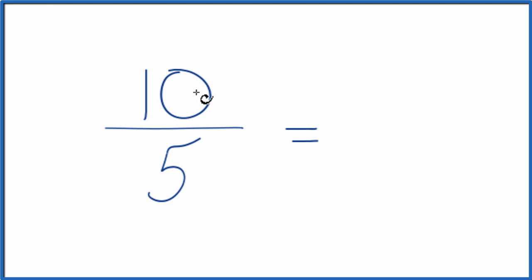So we divide 10 by 5, that gives us 2, and 5 by 5 gives us 1. So our greatest common factor was 5. 10 divided by 5 gives us 2, 5 divided by 5 gives us 1.